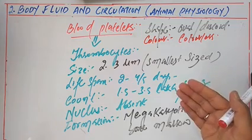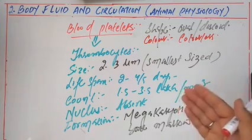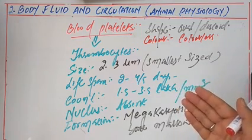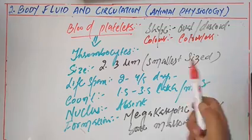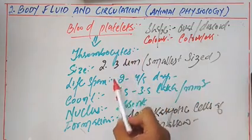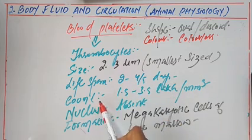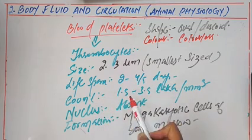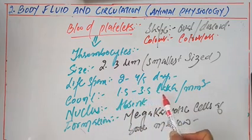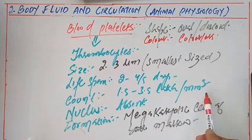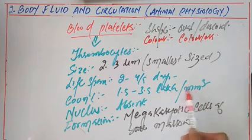The size of blood platelets is 2 to 3 micrometers, their life span is 2 to 4 to 5 days, and the total blood platelet count is 1.5 to 3.5 lakhs per cubic millimeter.